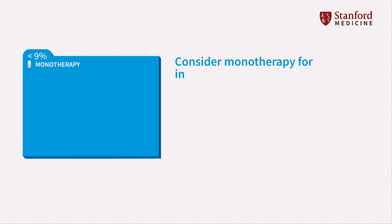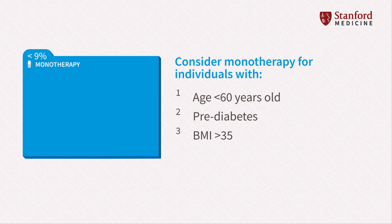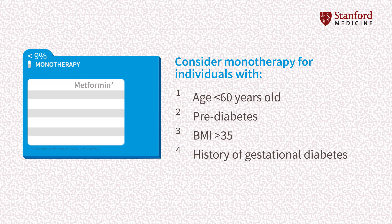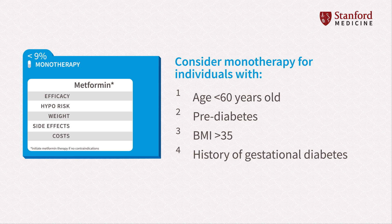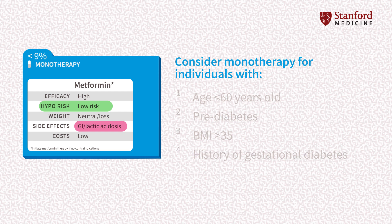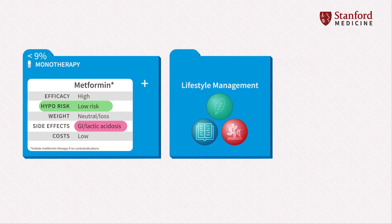Monotherapy should be considered for individuals younger than 65 years old with pre-diabetes, a BMI greater than 35, and women with a history of gestational diabetes (GDM). It can also be used for first-line therapy if the A1C is less than 9%. These therapies highlight important factors such as the general efficacy of the agent, the risk of hypoglycemia, how likely the agent is to affect the patient's weight, other side effects or comorbidities, and the cost of treatment. Determining which agents are best requires weighing these factors with the patient's lifestyle and capacity for additional lifestyle management changes.